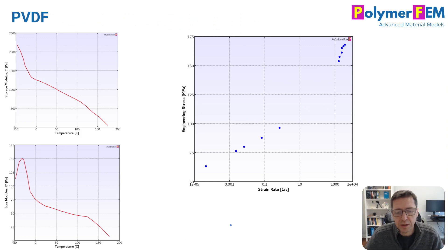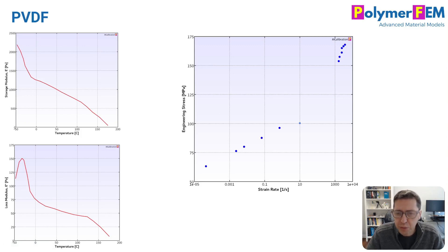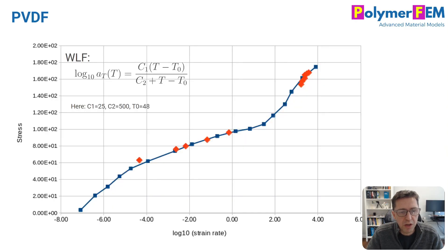Now back to PVDF. PVDF is a material that shows a bilinear response for stress versus strain rate. Looking at a plot of storage and loss modulus for PVDF, we see both an alpha transition and a beta transition — and that is exactly why we observe the bilinear response in PVDF as well.